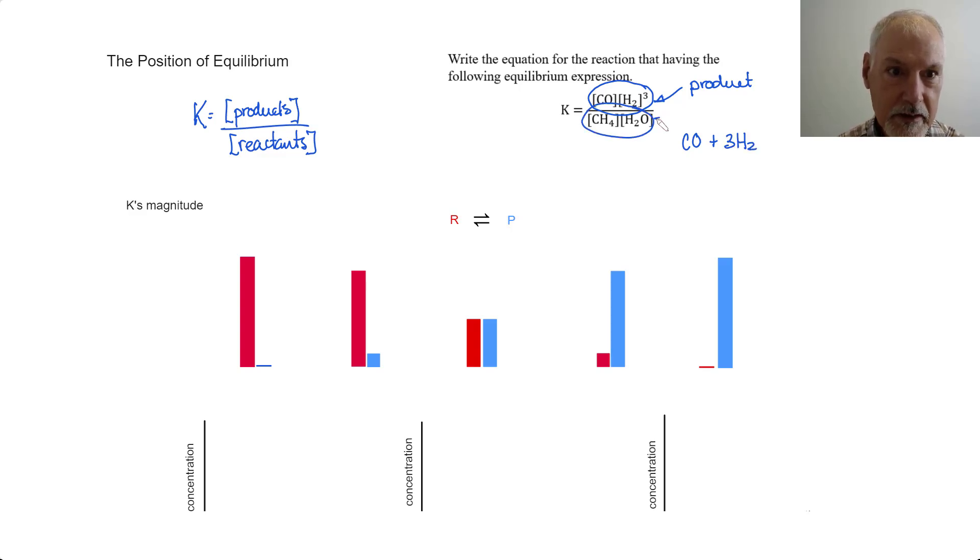And this information is going to be about the reactants. So, I can say we're going to have methane and water. And then we'll put in the equilibrium arrow. So, that's the equation that corresponds to that particular expression.